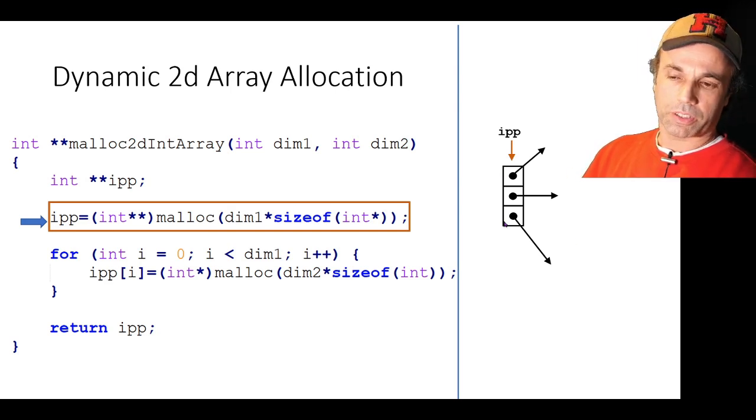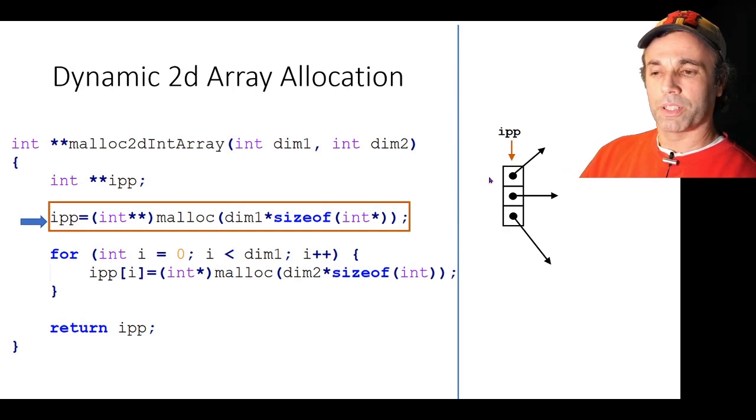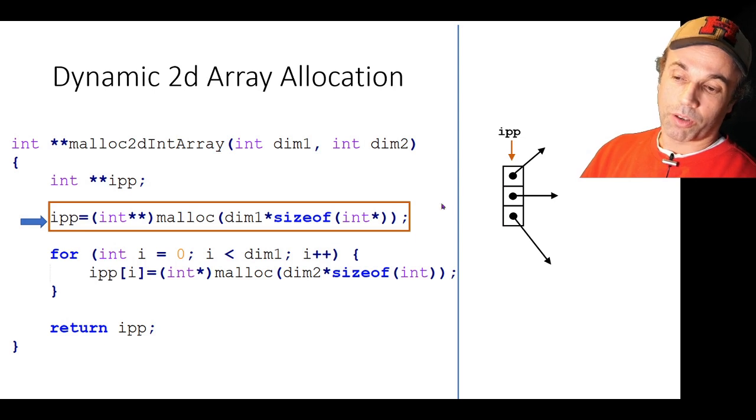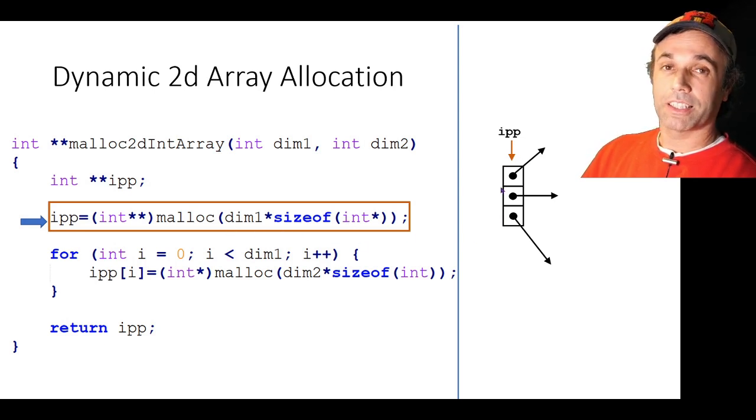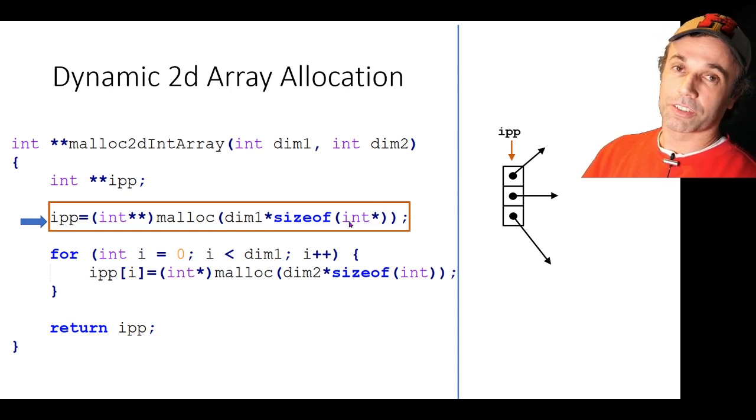So these blocks here represent those 24 bytes of memory but there's just three blocks here not 24. Why do you think that is? Well the reason is that each one of these blocks represents a single int star and we've got three of them. So we've allocated enough memory for three pointers to integers and we're going to use those in a moment to build up our array.